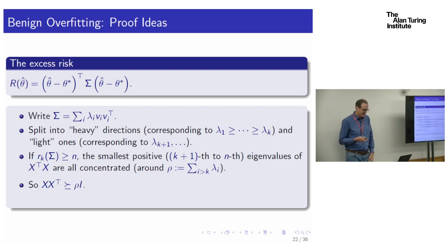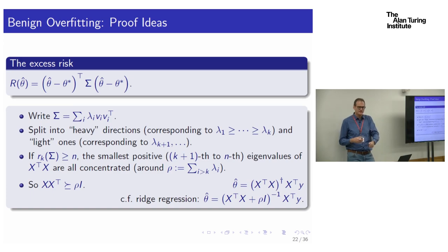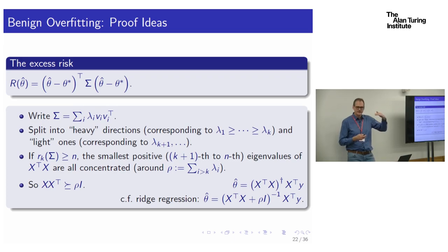All of those eigenvalues are concentrated around the sum of the eigenvalues — call that rho. The Gram matrix X X^T has all its eigenvalues at least as big as rho. This is reminiscent of ridge regression — in ridge regression we add something to X^T X to bound eigenvalues away from zero. Here we take the pseudo-inverse of X^T X, and in all non-zero directions, eigenvalues are bounded away from zero again. The zero directions get zeroed out, so they don't hurt us.